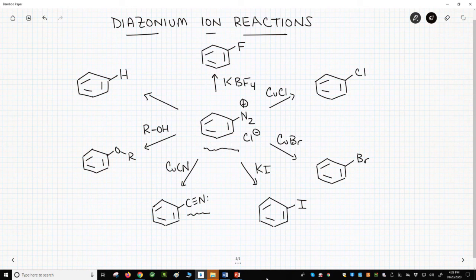Finally, in the upper left, we have this reaction treating a diazonium ion with hypophosphorus acid. That's H3PO2, not phosphoric acid, H3PO4. This removes the diazonium ion and replaces it with a hydrogen.